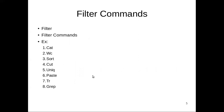Next we are moving on to filter commands. A filter is a program used to process a data stream. We have a set of data, we want to do some manipulations on this data, and we get the result using filter commands. Filter commands receive the data, manipulate it, and show the result. There are eight important filter commands. The first four — cat, wc, sort, and cut — we are going to study today. Unique, paste, tr, and grep commands will be discussed in the next class.